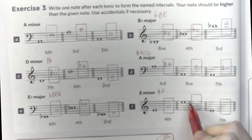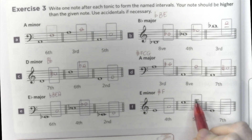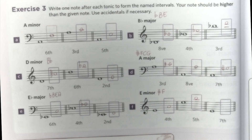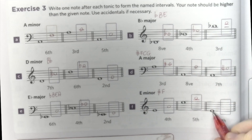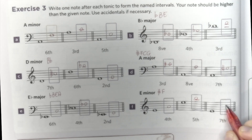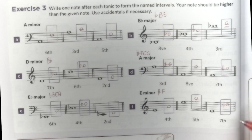Here it is. A fifth from Mi is Si: Mi, Fa, Sol, La, Si. Mi, Fa, Sol — La on the ledger line and Si above. Mi, Fa, Sol, La, Si, Do, Re — one, two, three, four, five, six, seven — and it is sharp because it's the leading note, so we need to sharpen it.